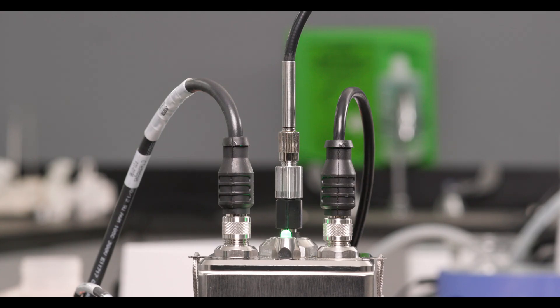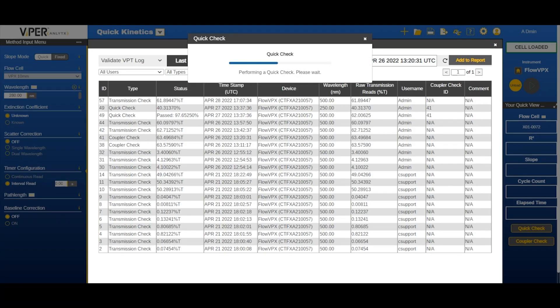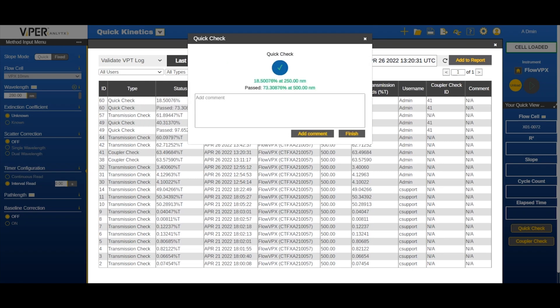The software will quickly begin measuring transmission and will display the results. If the results fail, refer to our troubleshooting video for suggestions on resolving low transmission.